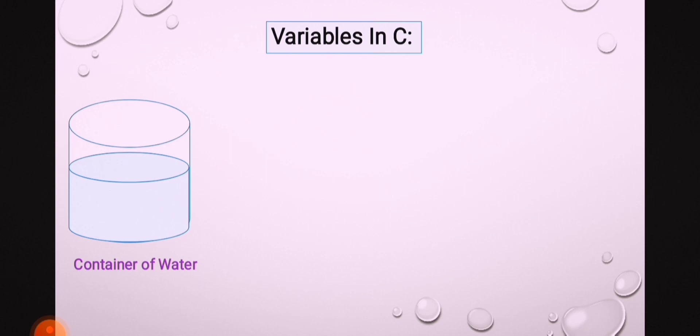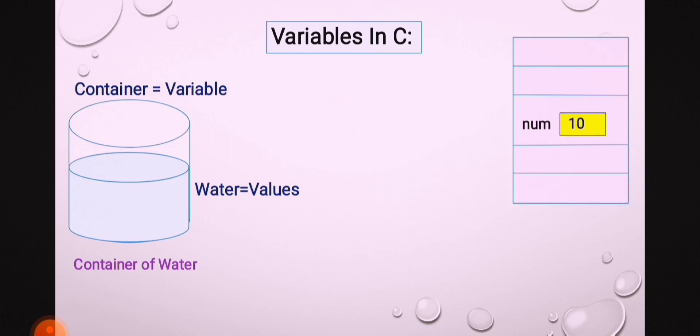A container is like a variable and the value of the variable is like water. A container occupies some space, and it also stores some data in the form of solid or liquid. Similarly, a variable also occupies space. Any type of data like integer, char, or float.